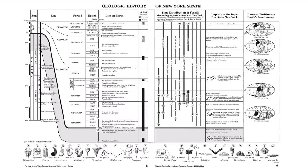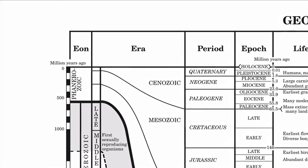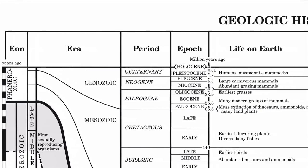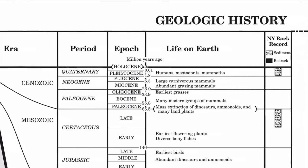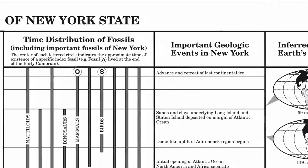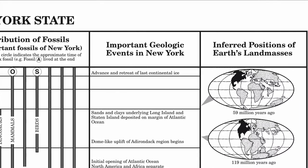There's a lot of information here, so let's take a look at what we're given. Running across the top on page 8, there are four timespans used to keep track of time: from Eon to Era to Period to Epoch. Then there's life on Earth, history of bedrock, and on page 9, distribution of fossils, important geologic events in New York, and the inferred position of Earth's continents and landmasses.